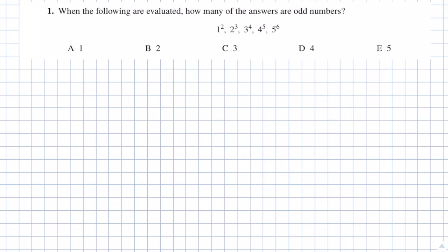Question 1. When the following are evaluated, how many of the answers are odd numbers? We've got 1 squared, 2 cubed, 3 to the power 4, 4 to the power 5, and 5 to the power 6. The answers are: A is 1, B is 2, C is 3, D is 4, and E is 5.